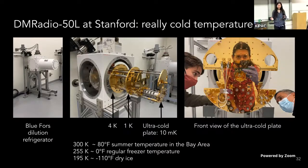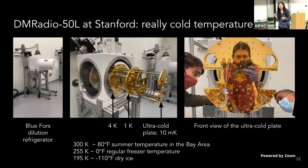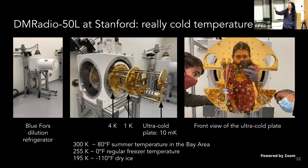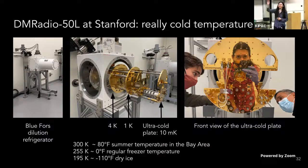This is what our cooler refrigerator looks like inside. On the left, that's it closed up — BlueFors is the company that makes it. When you open it, it has different plates at different temperatures: there's a 4 Kelvin stage, a 1 Kelvin temperature stage, and then an ultra-cold plate which gets down to 10 millikelvin. To give you a sense of how cold that actually is: 300 Kelvin is approximately outside temperature, 255 Kelvin is like freezer temperature, and 195 is dry ice — already a dangerous temperature. It's a big deal to get that cold. And there's a front view of this plate with a very nice gold coating.